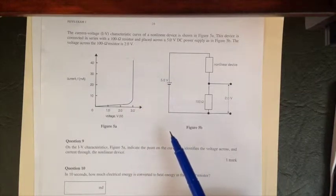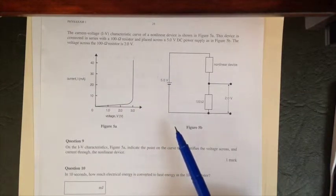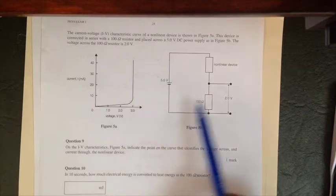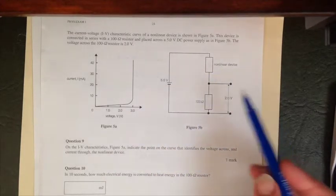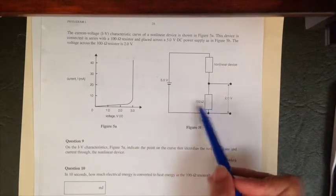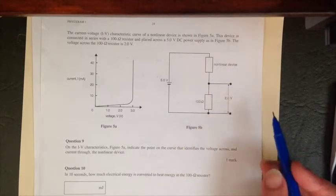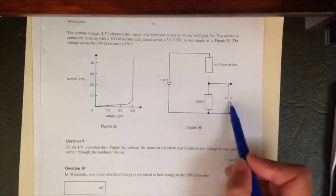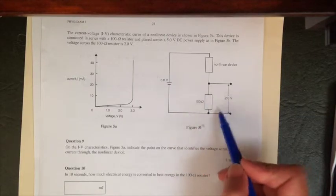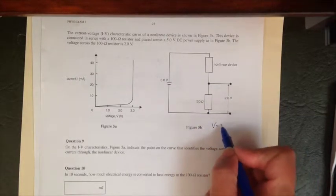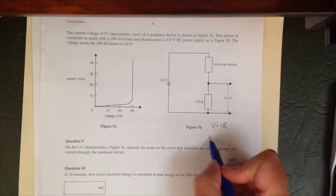So the first thing we have to identify is what is the voltage and the current going to be in our device. We can use the fact that the current will be the same both through our resistor and the nonlinear device. So we have enough information here to calculate the current using V equals IR, which means the current is going to equal the voltage divided by the resistance.